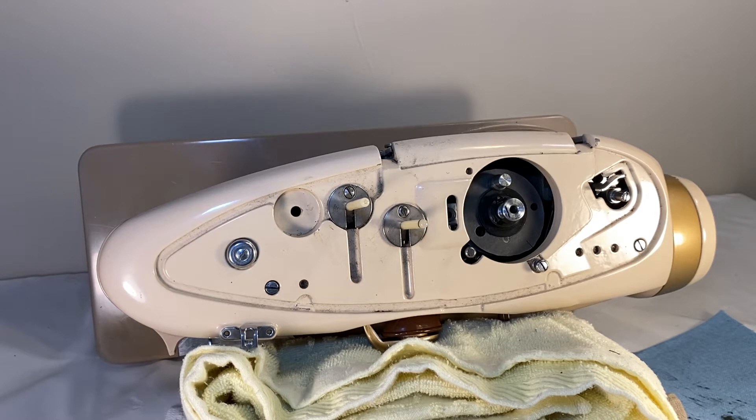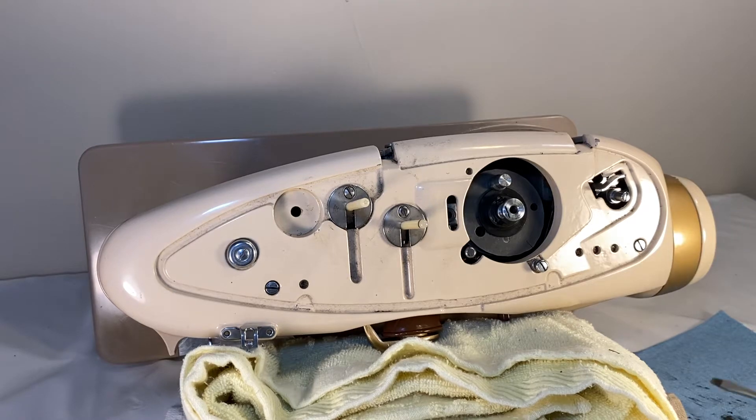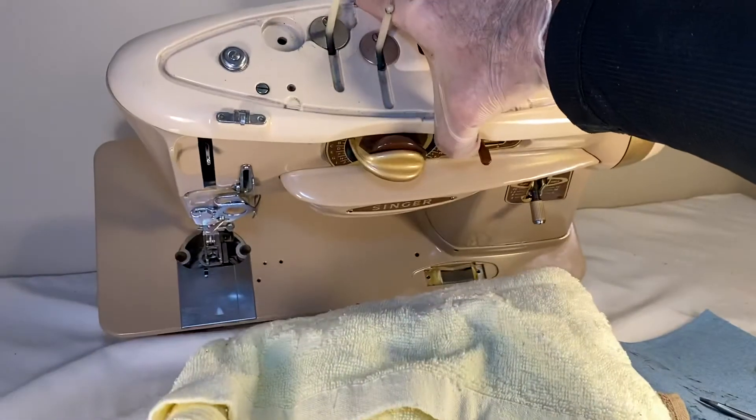This is Gina, Singer 500J. The front of the machine is on these towels. There we see that.